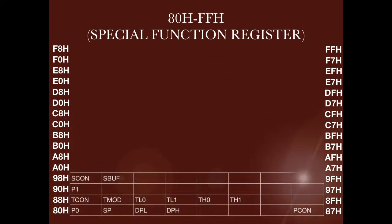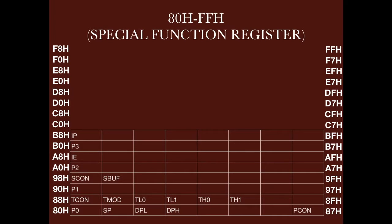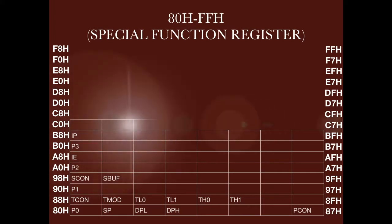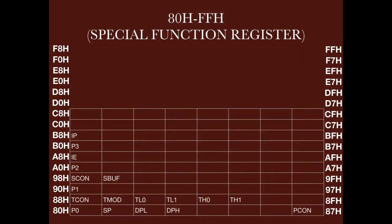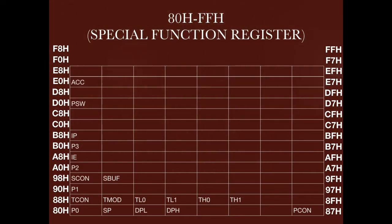At 98H and 99H, we have serial communication registers: SCON and SBUF. Then we have P2 and the Interrupt Enable register, which is used for interrupt masking. Then we have the P3 register, followed by IP or Interrupt Priority register for setting low or high priority. We also have the PSW register, which stands for Program Status Word, used for flags and register bank selection. Finally, we have the Accumulator register and Register B.